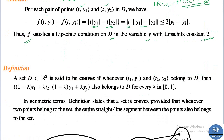We have another definition: a set D ⊆ ℝ² is said to be convex if whenever (t₁, y₁) and (t₂, y₂) belong to D, the linear combination (1 − λ)t₁ + λt₂, (1 − λ)y₁ + λy₂ also belongs to D for every λ ∈ [0, 1]. Geometrically, a set is convex provided that whenever two points belong to that set, the entire straight line segment between those points also belongs to the set.